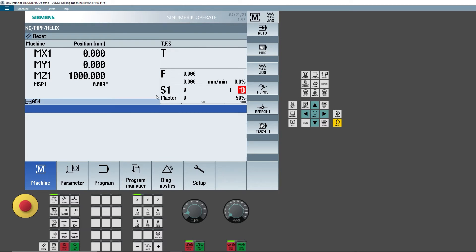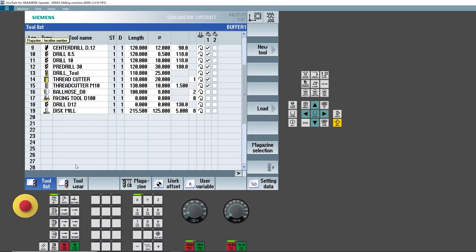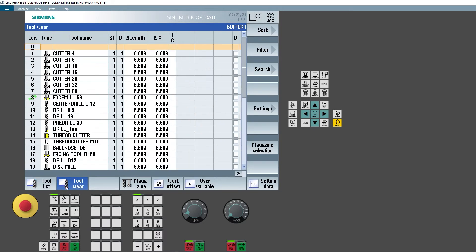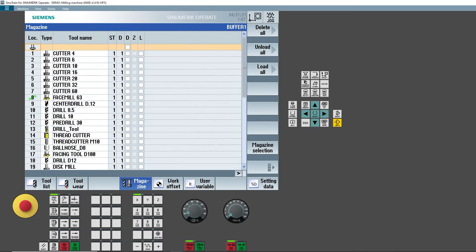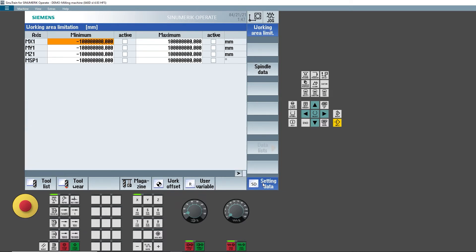Clicking on the Parameter softkey takes you to the area dedicated to all the data required for setting up the machine, therefore the tool list, the work zero offset and the window for checking the variables.